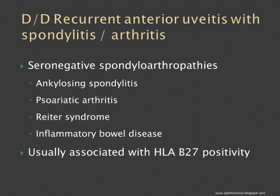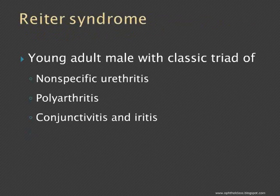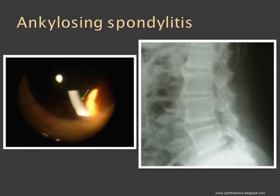Reiter's syndrome is classically seen in young adults with a triad of non-specific urethritis, polyarthritis, tendinitis, and may have iritis. For ankylosing spondylitis, an X-ray of the sacroiliac joints will confirm the diagnosis, and the KPs in this case will be fine and non-granulomatous.